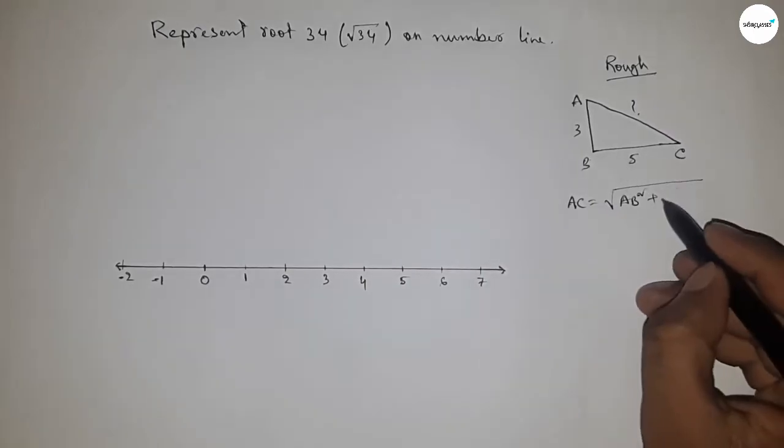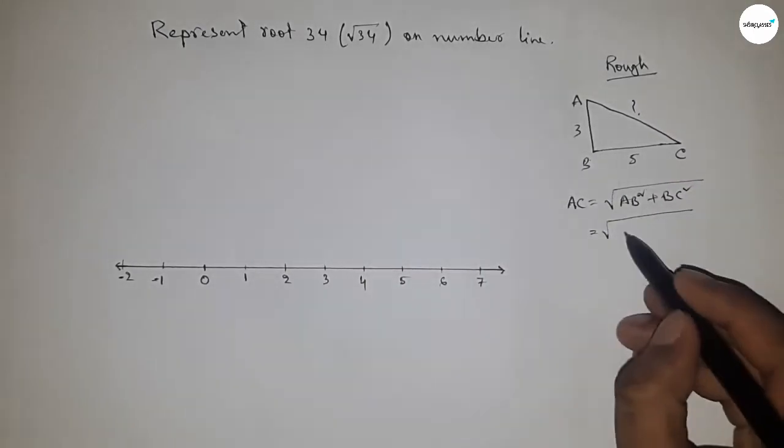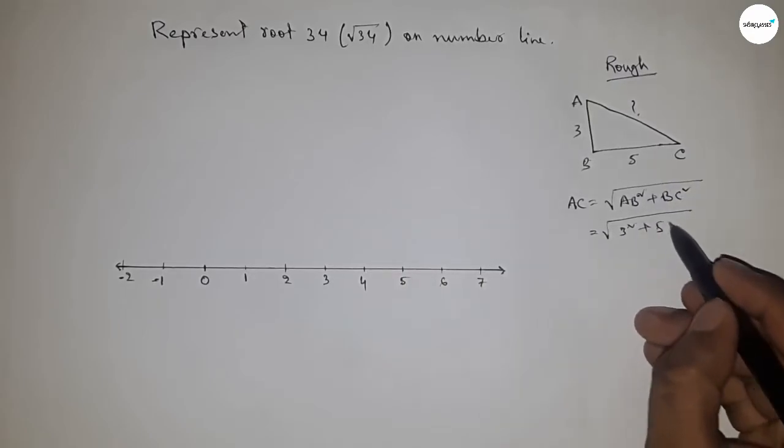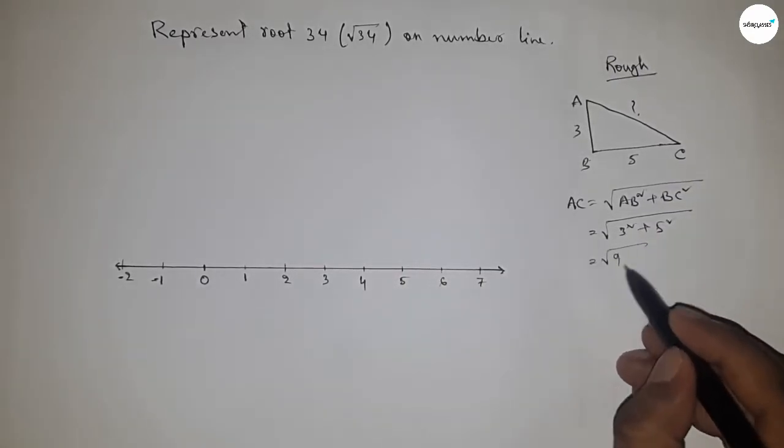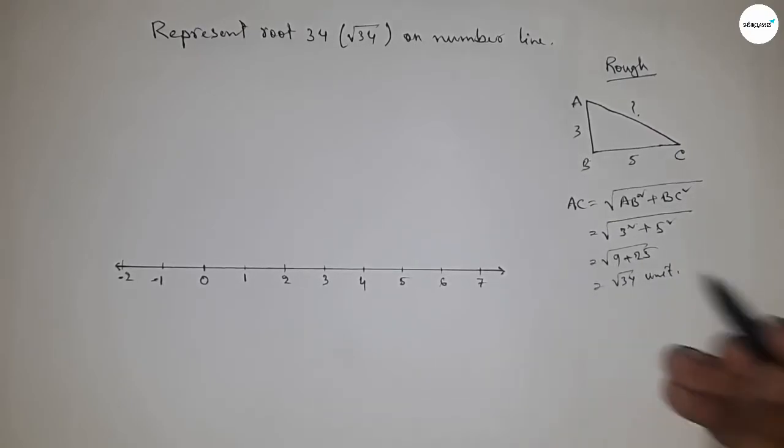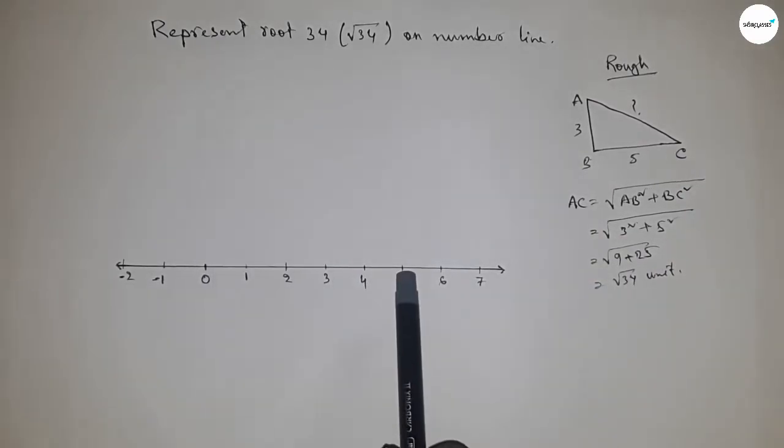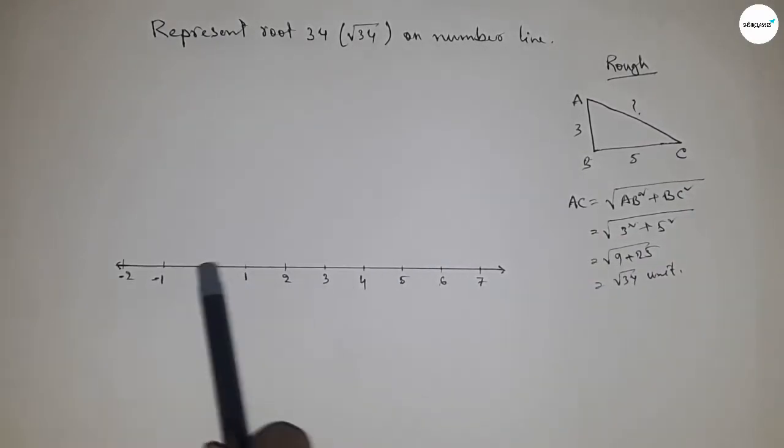So height AB is three square, plus base BC five square. So this is nine plus 25, so this is root 34 units. This concept we're applying between zero to five. So this is O point and this is A point.